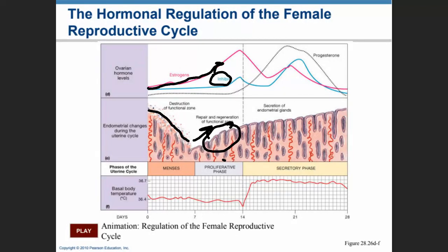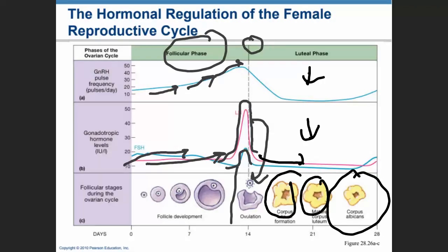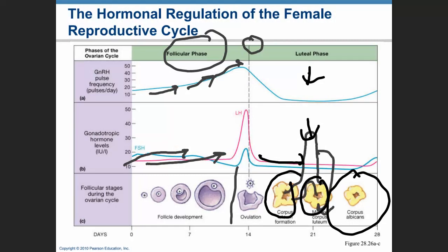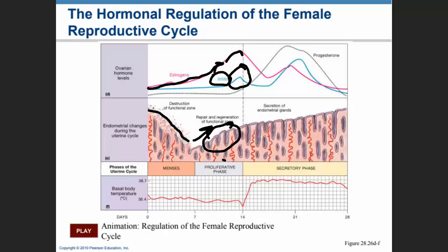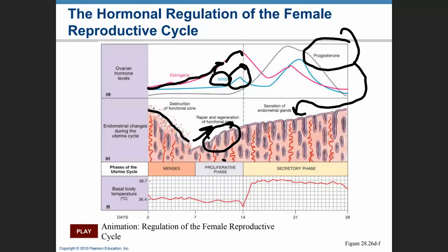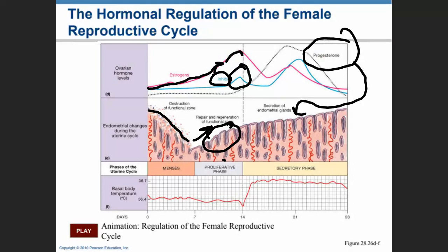After ovulation, there is a tremendous estrogen increase, just like a tremendous LH increase. That is going to coincide with an increase in the secretion of inhibin, which stops the secretion of LH and FSH. After ovulation, that's when we have a tremendous secretion of progesterone. Progesterone is the hormone of pregnancy, and it develops the secretory phase in the uterine cycle in preparation for a pregnancy. At the same time, inhibin is secreted in tremendous amounts along with high levels of estrogen, which are going to inhibit FSH and LH.